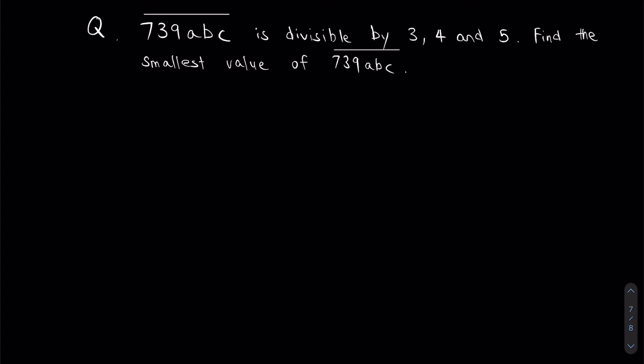So since we're interested in 3, 4 and 5, let's talk about them. For 3, the divisibility rule is sum of all numbers is divisible by 3. So that's the divisibility rule of 3.